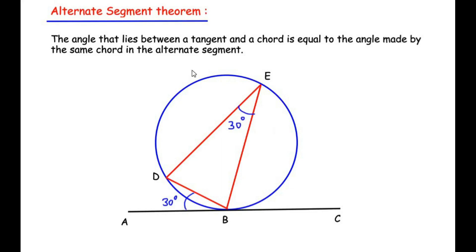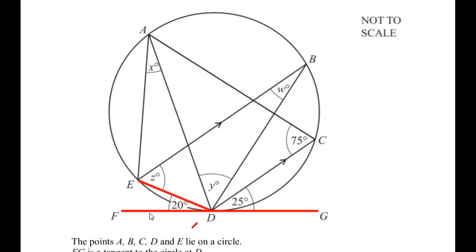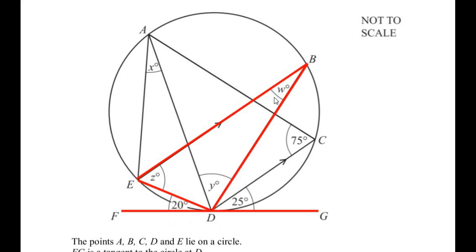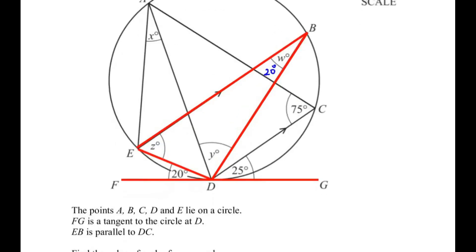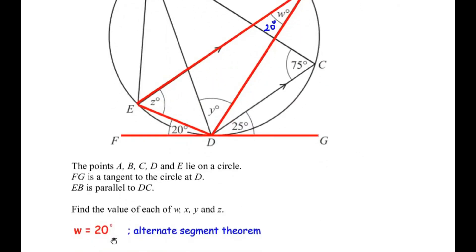Let us see how we can make use of this theorem to solve the example. The tangent and the chord are highlighted, and we can see that the chord is making an angle of 20 degrees with the tangent. The same chord makes an angle at point B in the alternate or major segment. Which means angle W is also going to be 20 degrees. So angle W equals 20 degrees, by the alternate segment theorem.